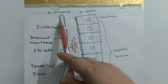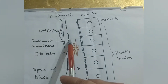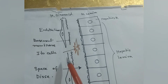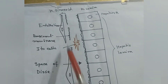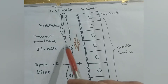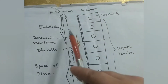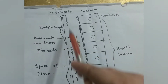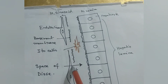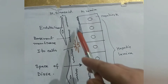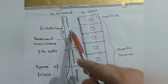The hepatic sinusoid is formed by a discontinuous capillary. The endothelium is discontinuous, meaning there is a gap present between the endothelium. The basement membrane of this discontinuous capillary is also discontinuous — there is a gap between the basement membrane. This tiny space is known as the Space of Disse.